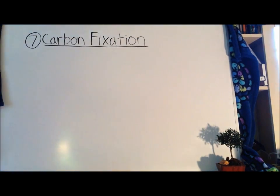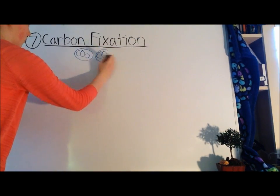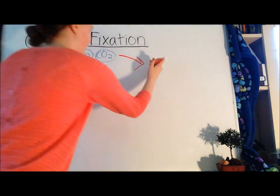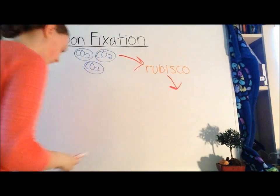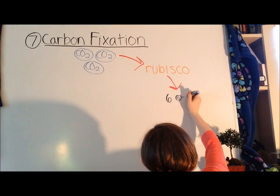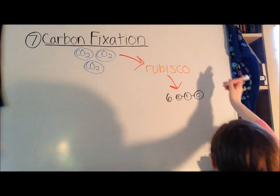Step seven, carbon fixation. We begin with three molecules of carbon dioxide, or CO2. They are fixed into six three-carbon sugars with the help of RuBisCO, another molecule. Each has a phosphate group attached to the end.